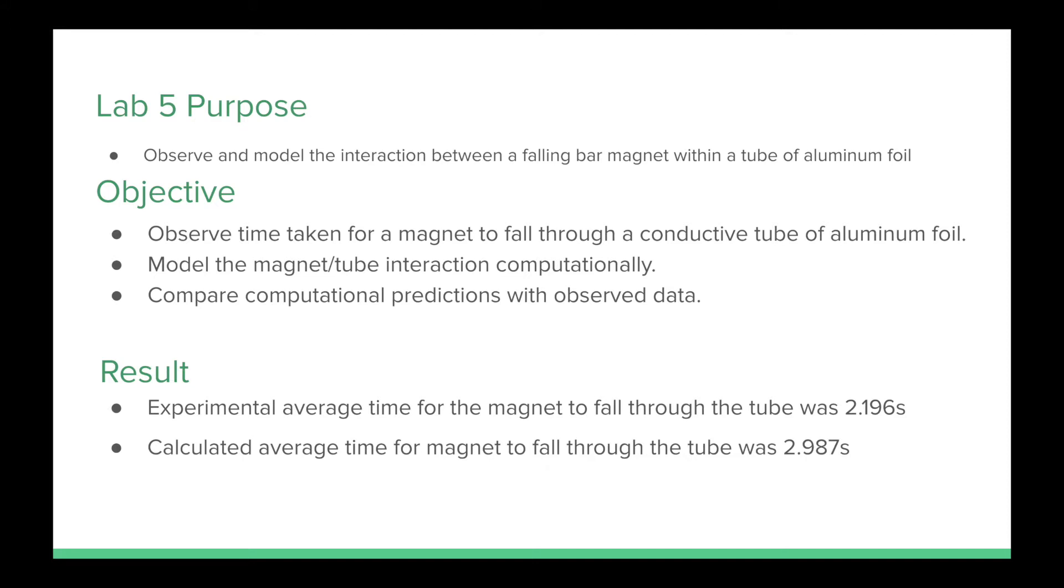The objective of Lab 5 was to collect data of the time taken for a magnet to fall through a conductive tube of aluminum foil. We'll then model the magnet-tube interaction computationally and compare computational predictions with observed data.